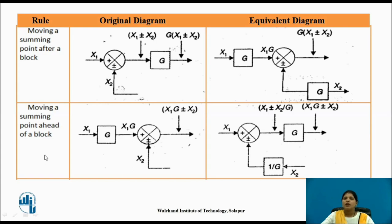So here 1 by G. The next rule is moving a summing point ahead of a block. Here the summing point is shifted before the block. While shifting a summing point before a block, add a block having a transfer function as the reciprocal of the transfer function of that given block — so here 1 by G.